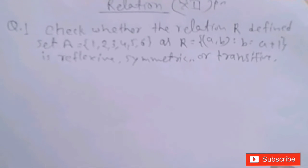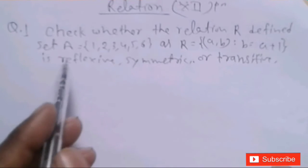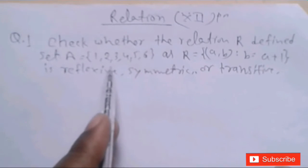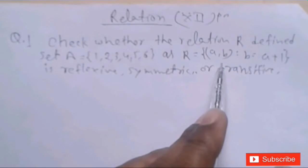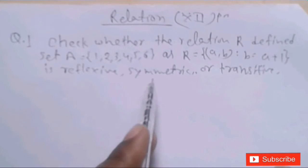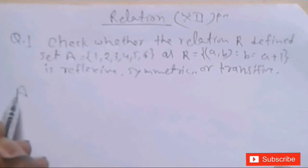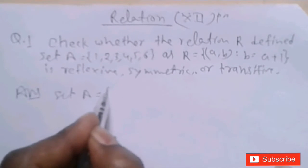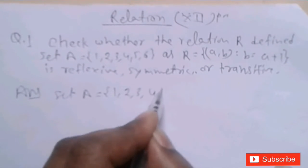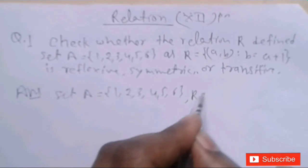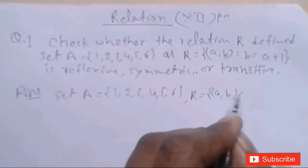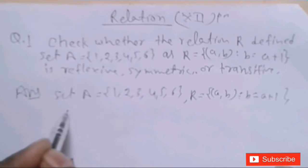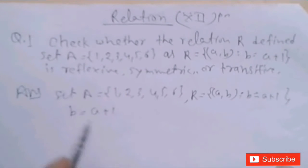Good morning. New question: check whether the relation R defined on set A = {1,2,3,4,5,6} as R = {(a,b) such that b = a+1} is reflexive, symmetric, or transitive. Here set A = {1,2,3,4,5,6} and R = {(a,b) such that b = a+1}. By putting values we get the pairs.